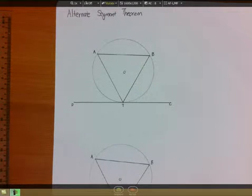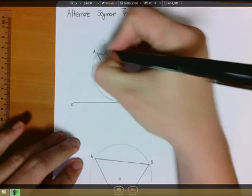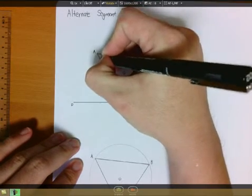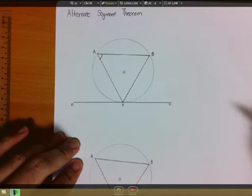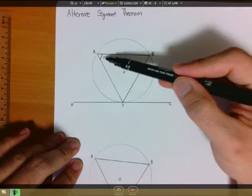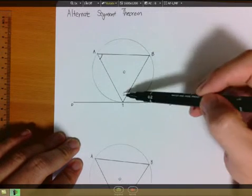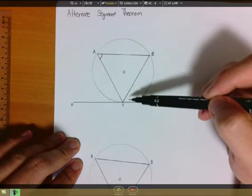Basically, the alternate segment theorem works like this. So I have an angle BAT. By the alternate segment theorem, usually I count like this: 1, 2, and I am outside of the triangle already.